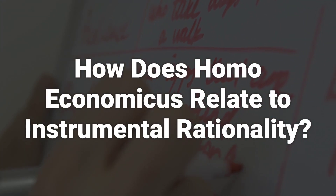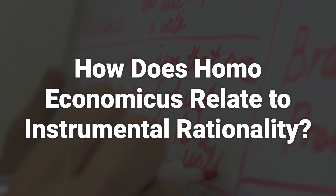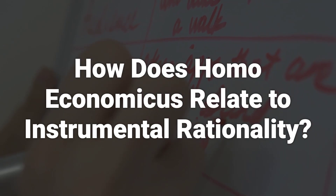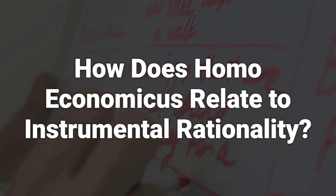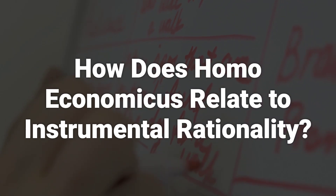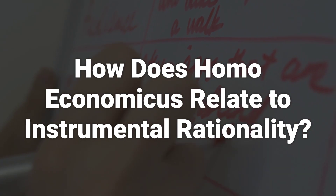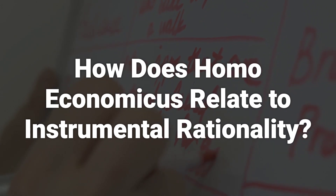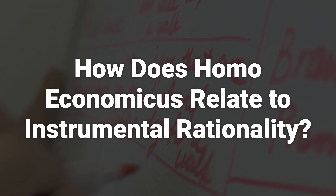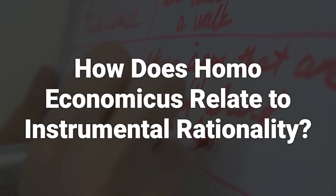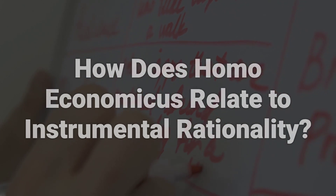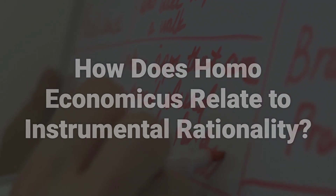Instrumental rationality can be contrasted with value rationality, which only recognizes ends that are right, or legitimate in themselves. Some characterizations paint the Homo economicus as a perfectly rational, but amoral, actor, and in this way, it could be said that Homo economicus acts in a way that is consistent with instrumental rationality.